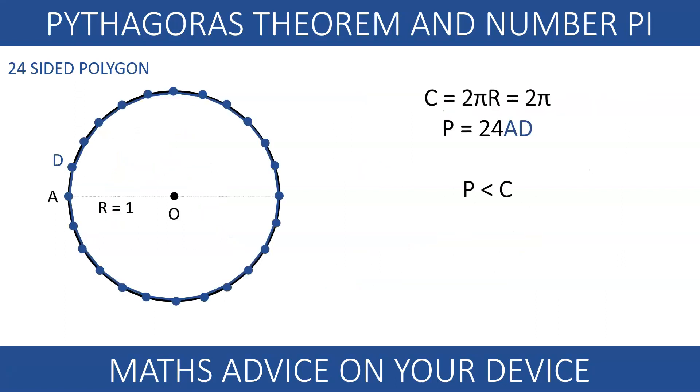Since this is a 24-sided polygon, 2π must be bigger than 24 AD, so π must be bigger than 12 AD. Replacing AD with 0.261, we know that π must be bigger than 3.132.